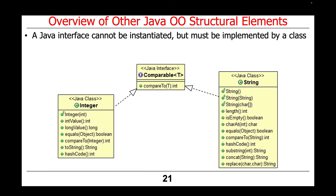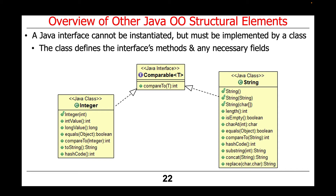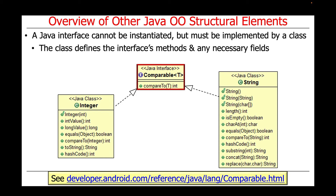A Java interface cannot be instantiated, but must be implemented by a class. The class defines the methods and any necessary fields needed to implement the interface's signature. The Comparable interface is an example of this — it's used to compare values for ordering, sorting, or other relationships. By itself, it just defines a method called compareTo. Other classes, like the Integer class or the String class in Java, implement that interface and fill in the compareTo method to do the comparison based on their particular data representation.